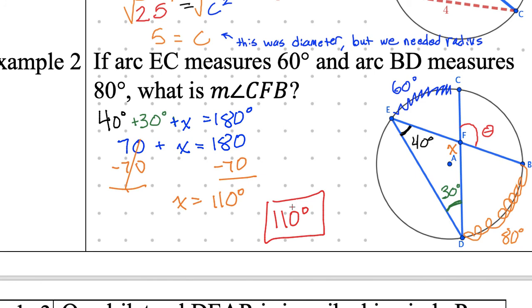To summarize that entire process: we labeled what we knew — the arc measures. We used inscribed angles: half of 60 is 30, half of 80 is 40. Then we used the fact that all three angles add up to 180 to find x equals 110. Vertical angles means the opposite angle is also the same, so theta is 110 degrees. Any questions about this problem?